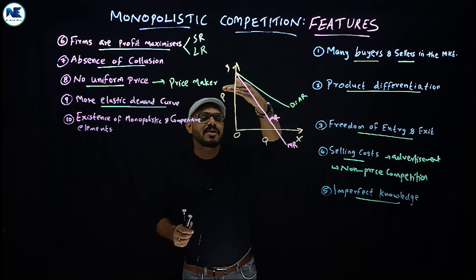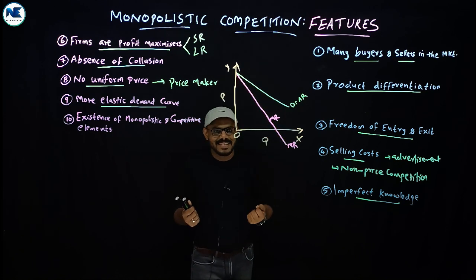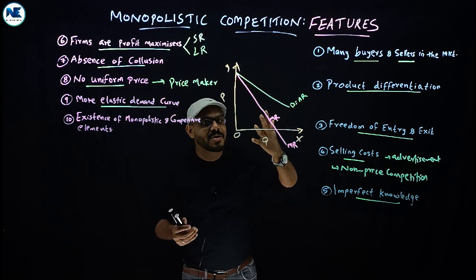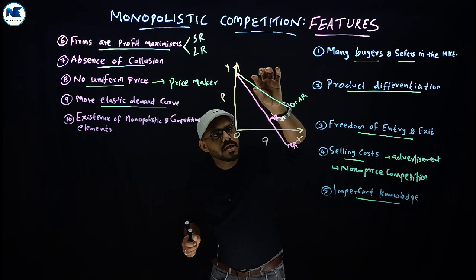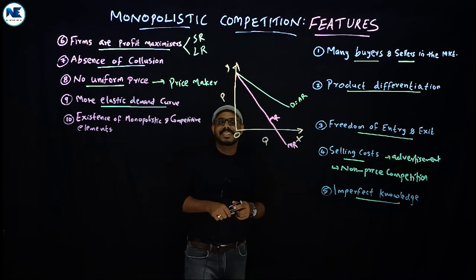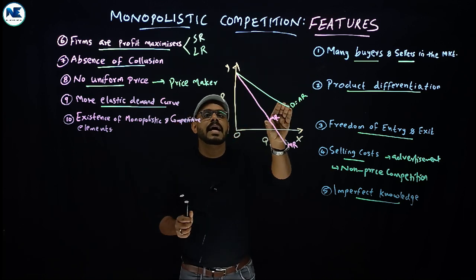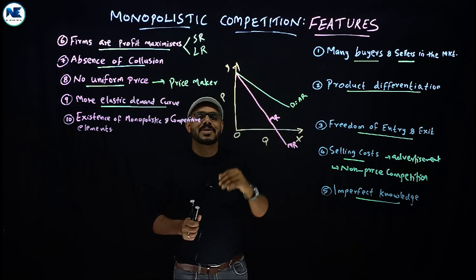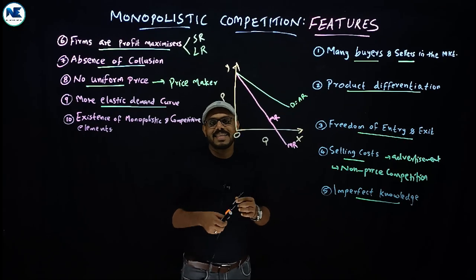If customers are not attracted, firms must use selling costs like advertisement to draw them in. The demand curve is more flat compared to monopoly. Cross elasticity of demand is very high in monopolistic competition — a change in the price of one product significantly affects the demand for another close substitute product.